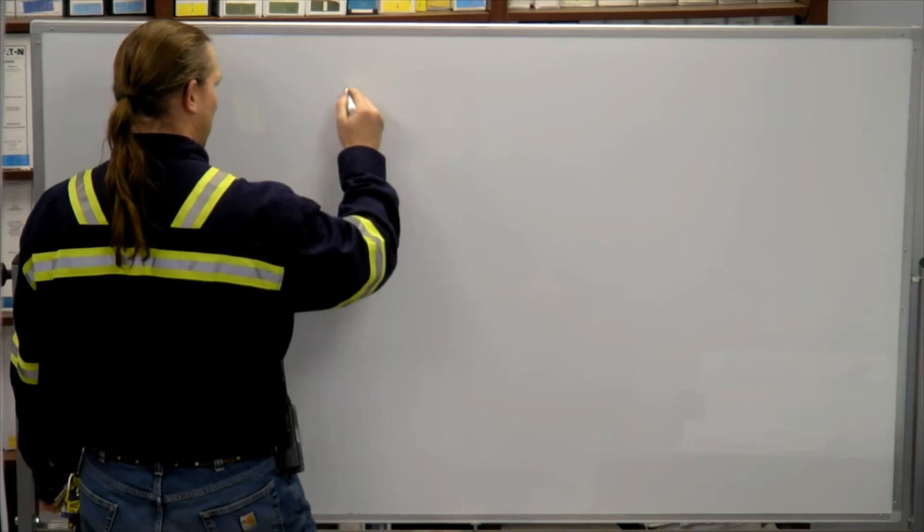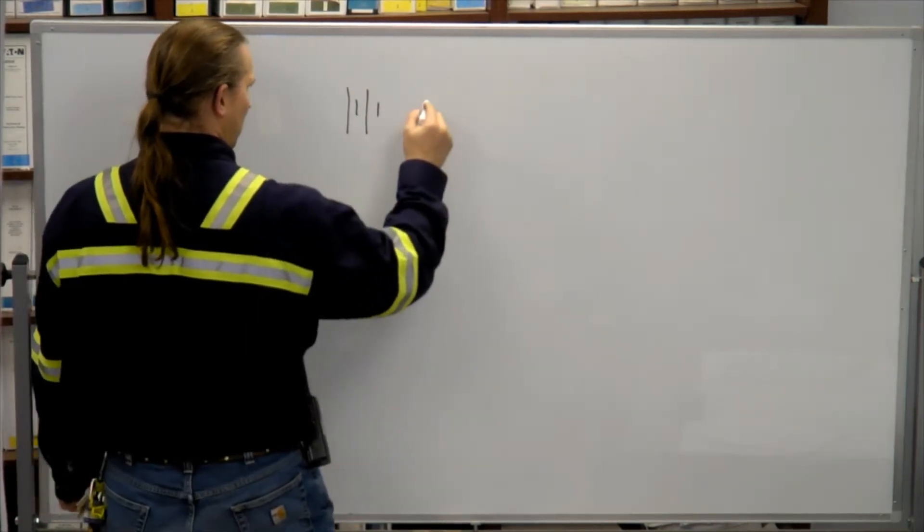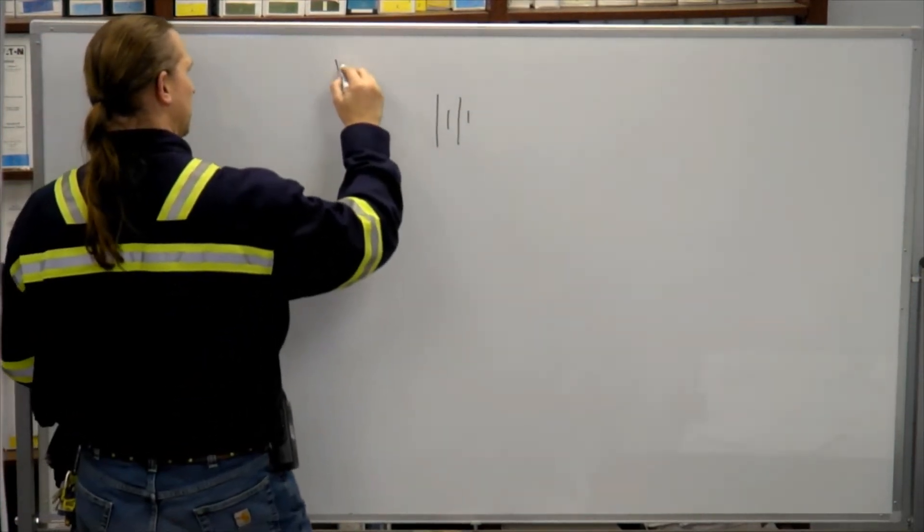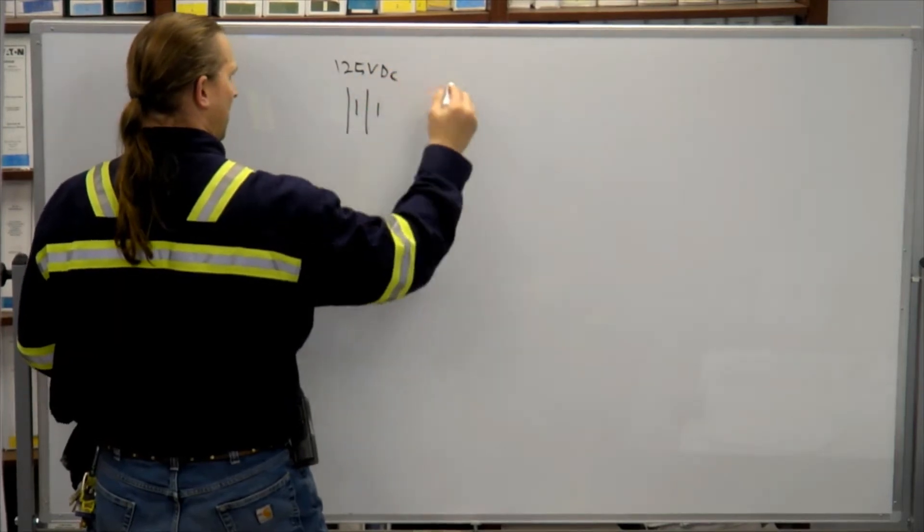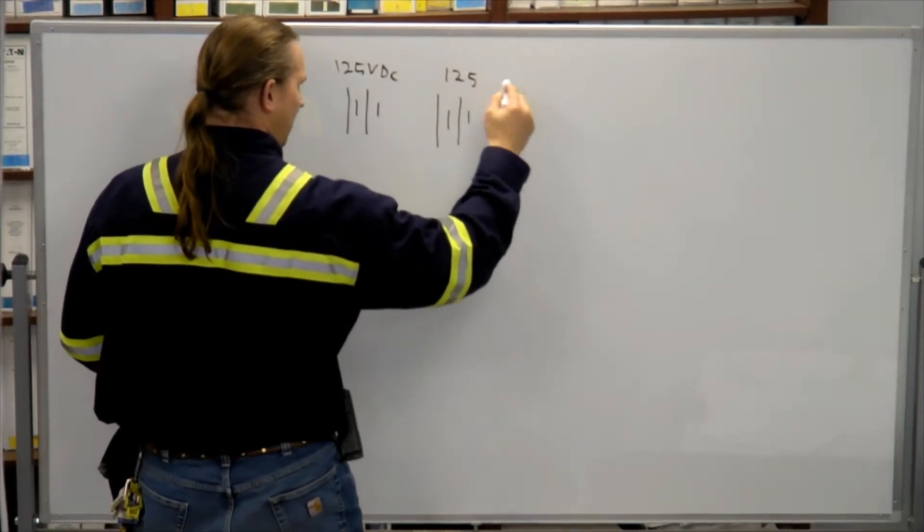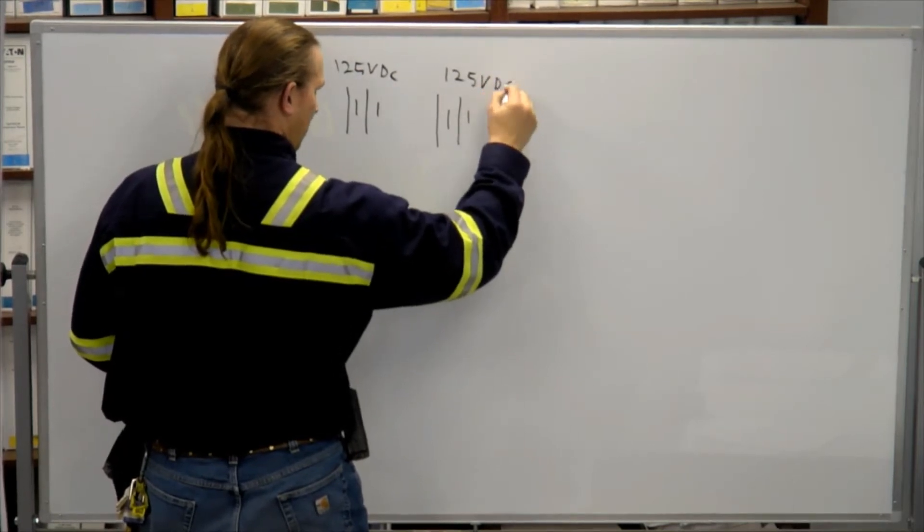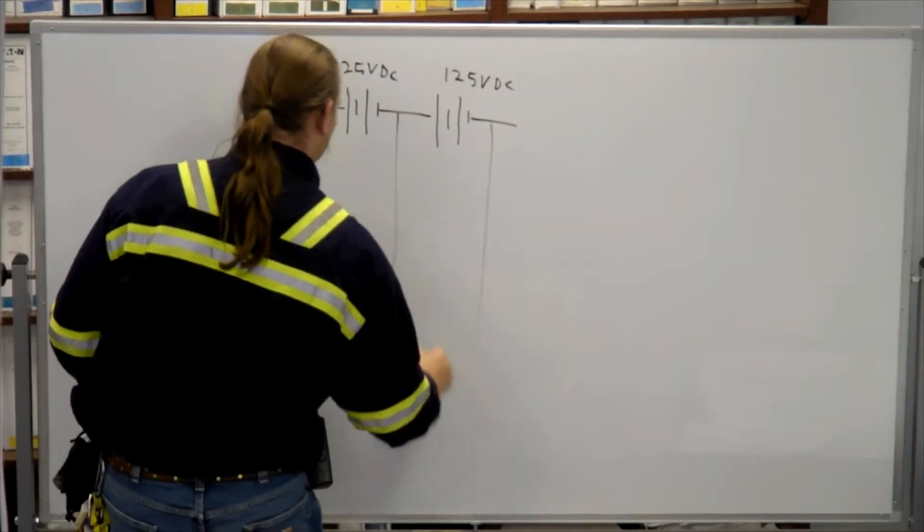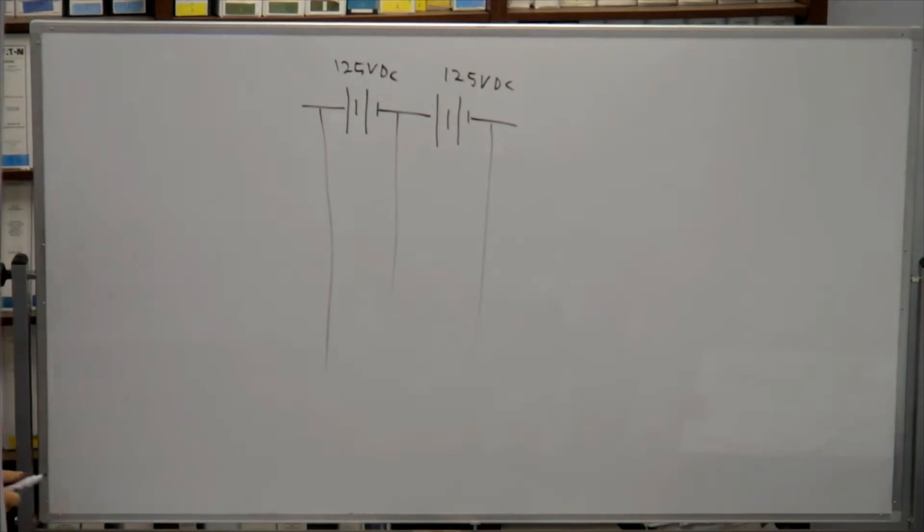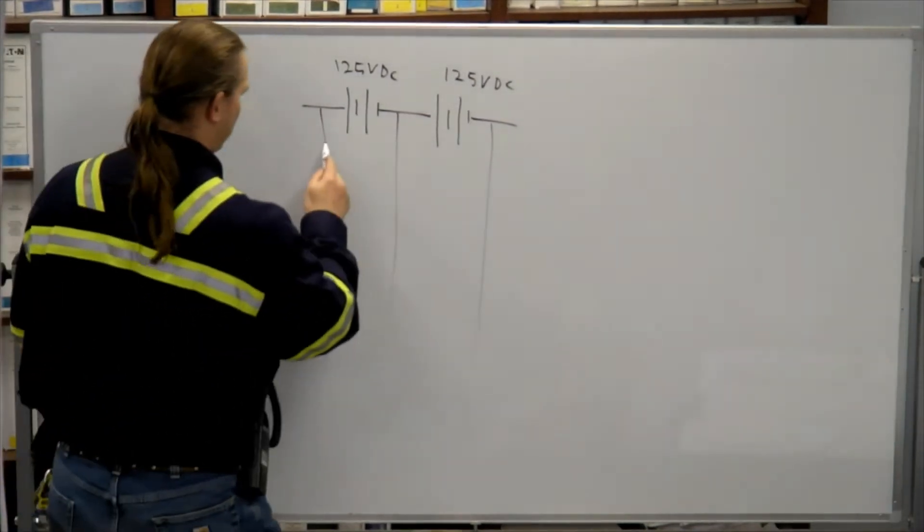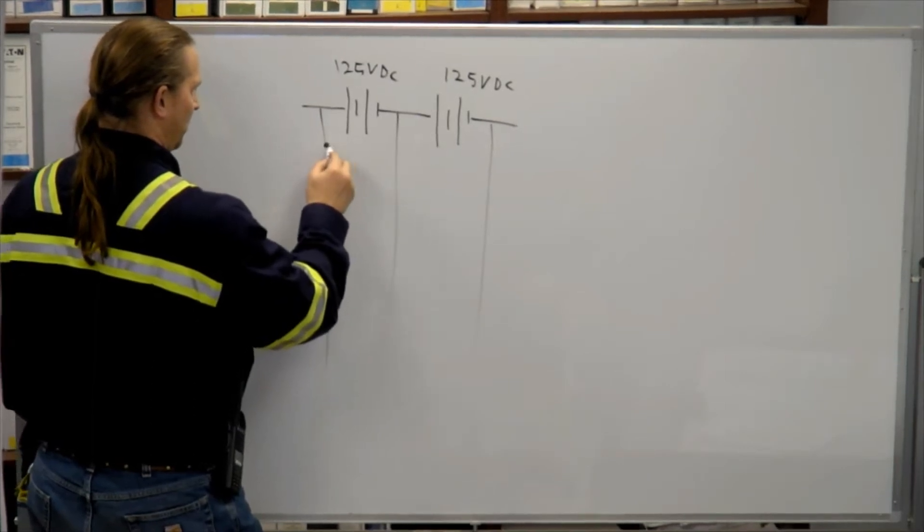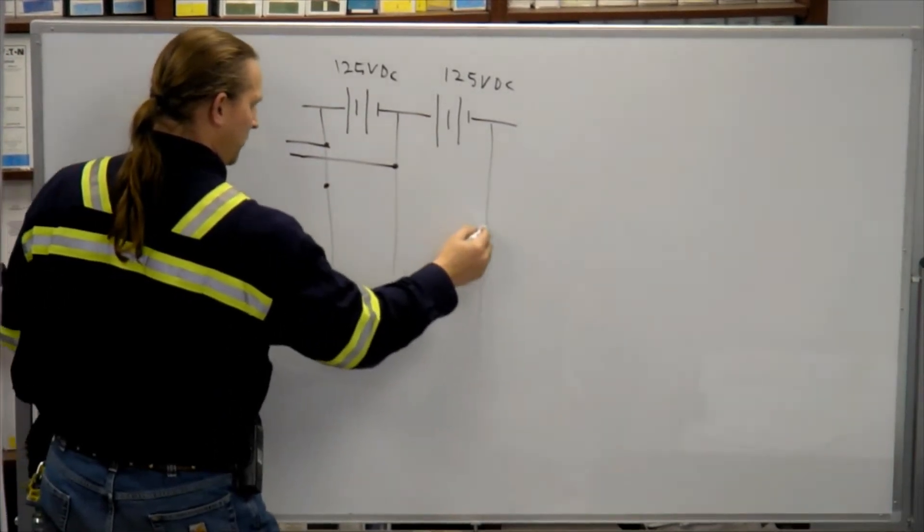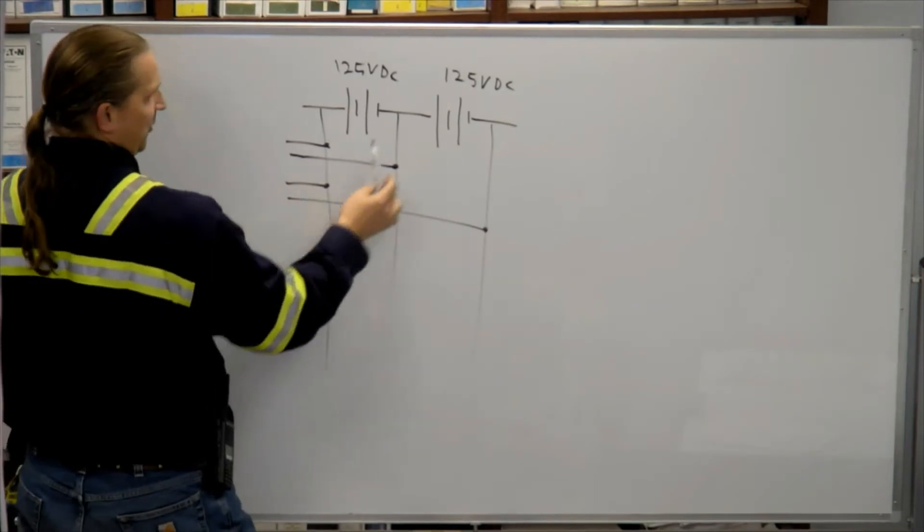So battery. We've got two battery banks that are both 125 volts DC. And then we have a switchboard coming off of those, and some loads tap across just half of it and other loads tap across both and use 250.